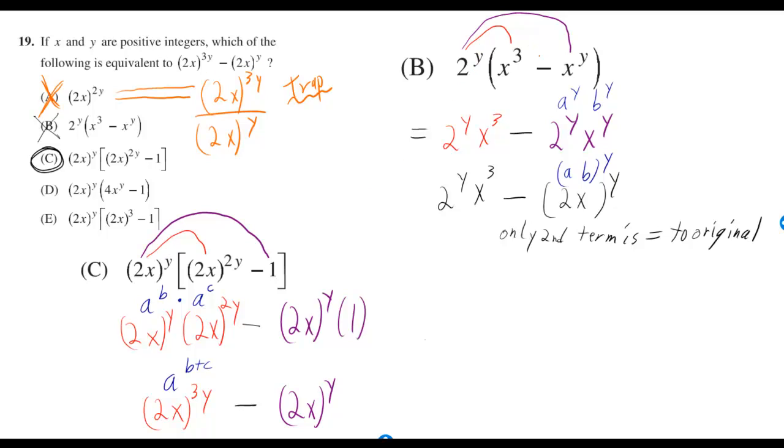For B, if we want to see if it's equal to the original, we can just try distributing the 2 to the y in B. And if you distribute the 2 to the y to the first term, to the x cubed, then you just have 2yx cubed. But there's really nothing I can do to simplify that.